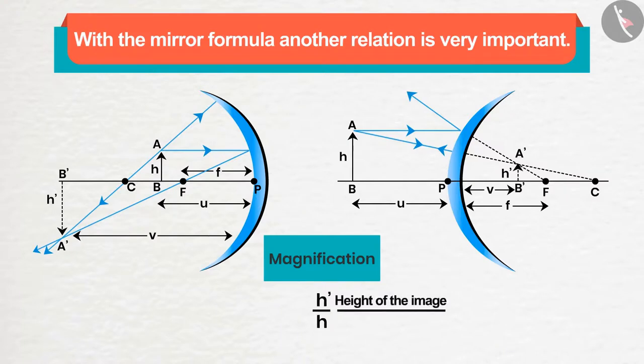Magnification is the ratio of the height of the image to the height of the object, which tells us how many times the image is larger or smaller with respect to the object. Magnification is represented by M. We can also represent it in terms of object and image distance.